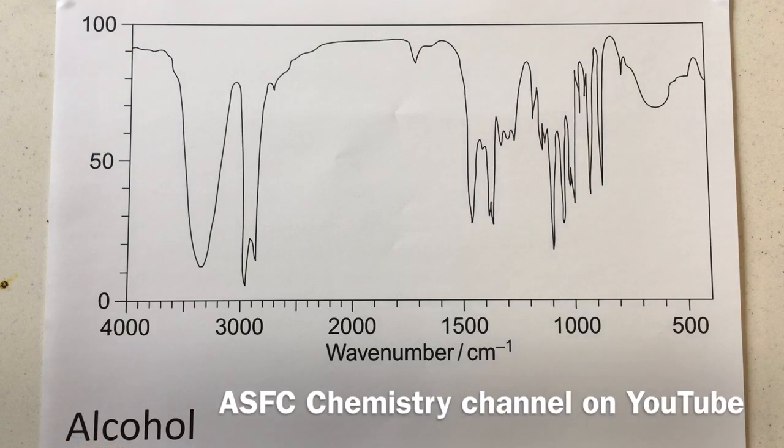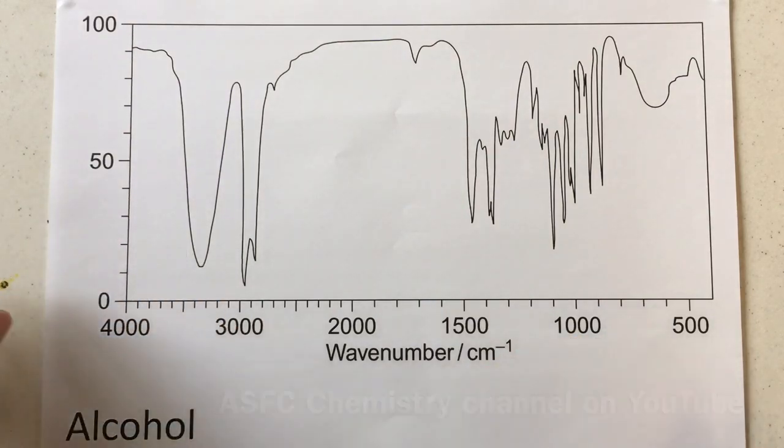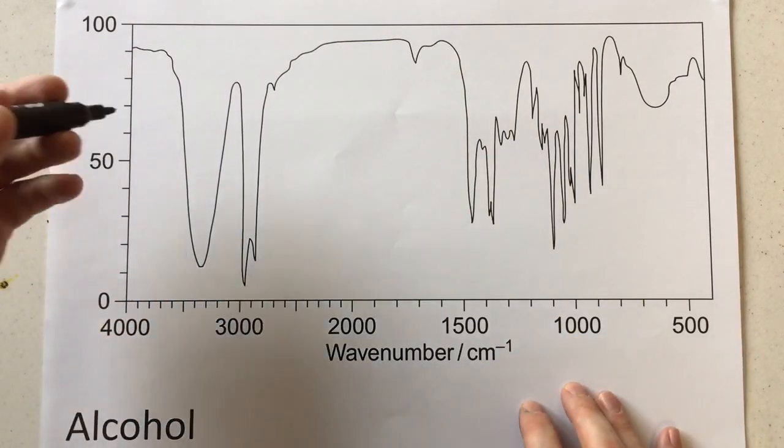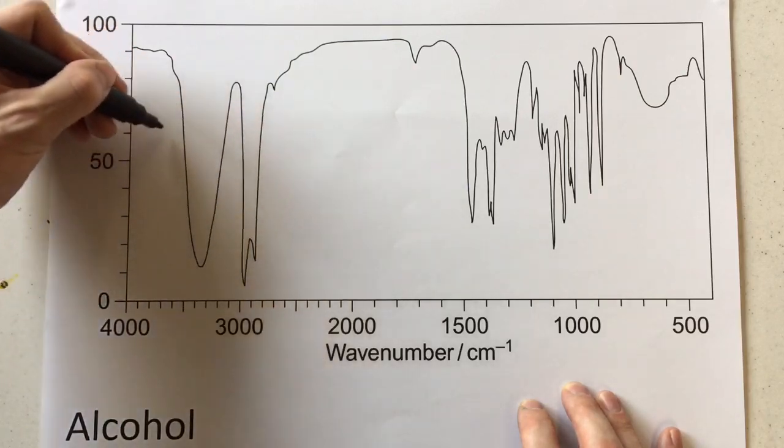Now what we're looking at here are obvious big peaks that tell us lots of information that this is an alcohol. Really for an alcohol, we're examining this region just at the far end up here.